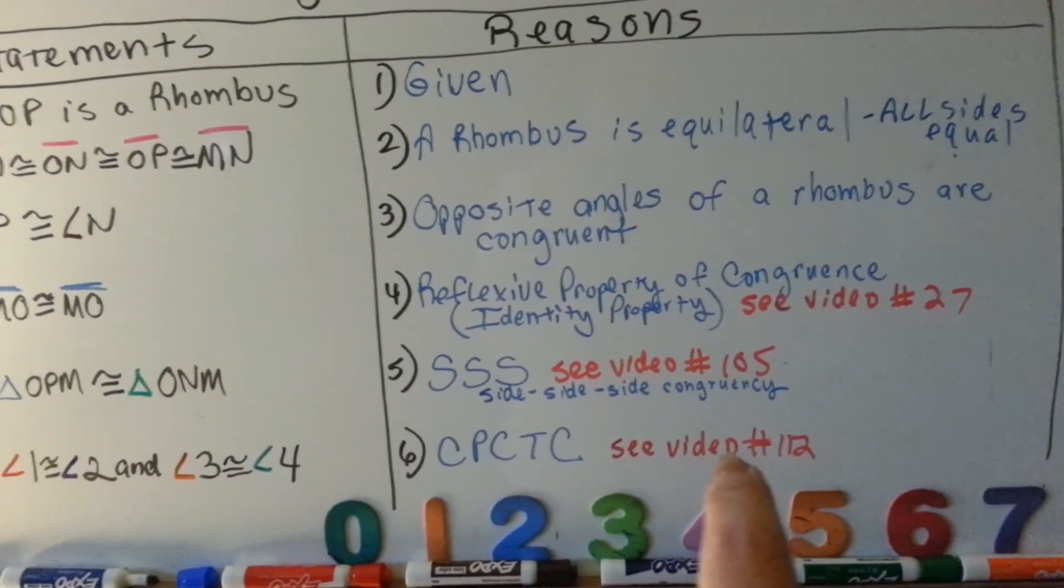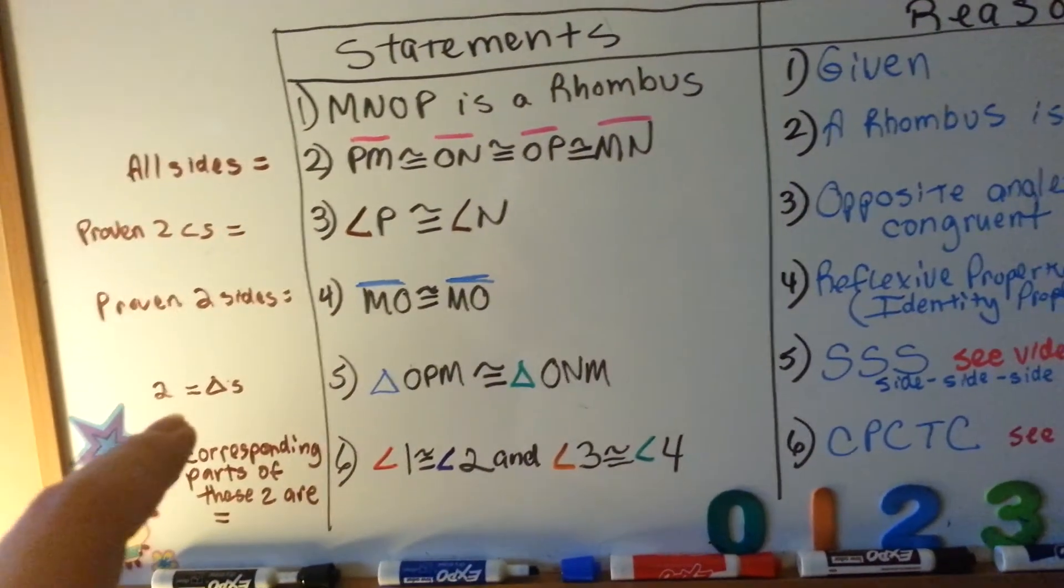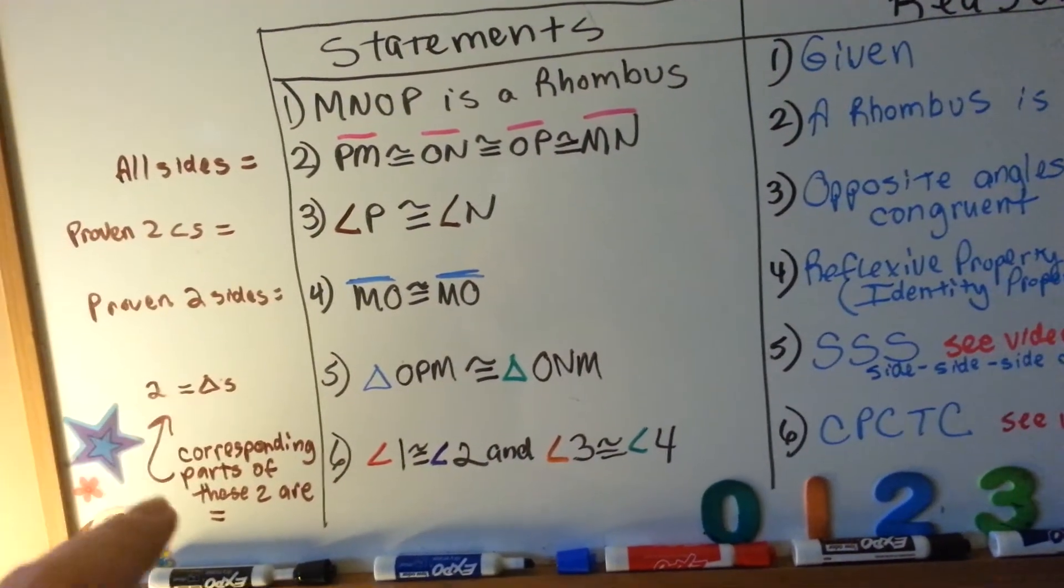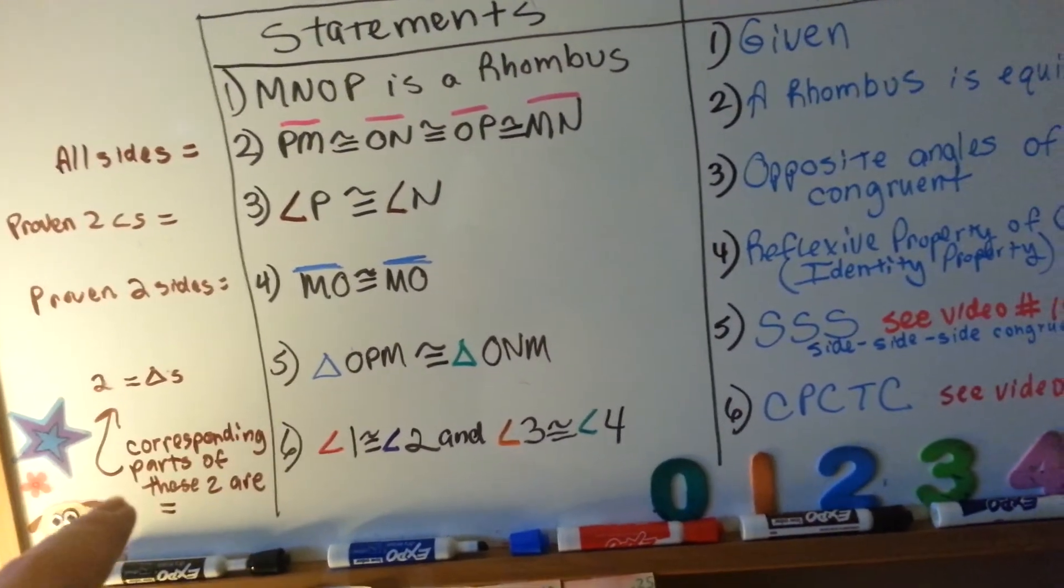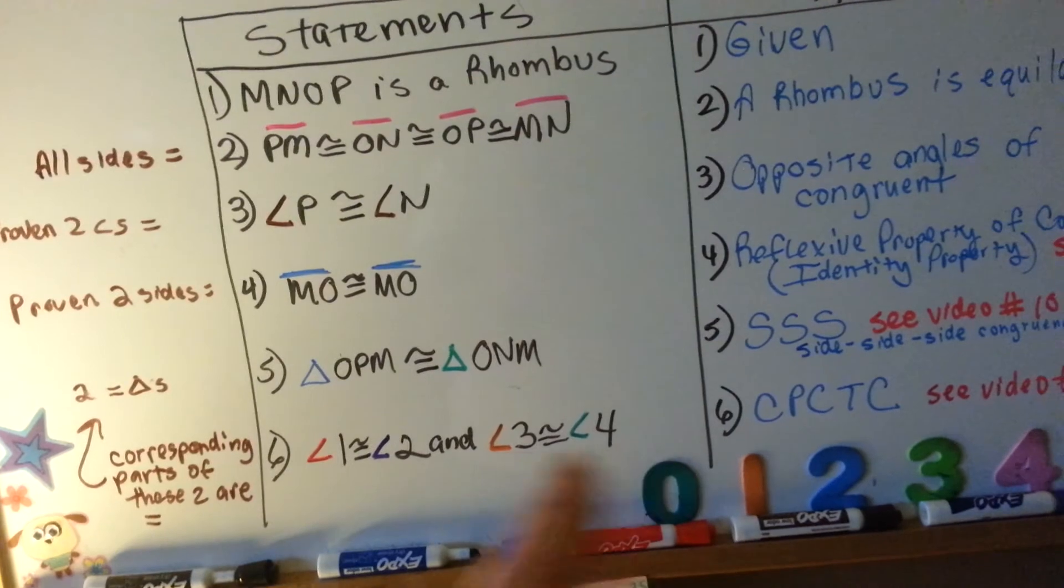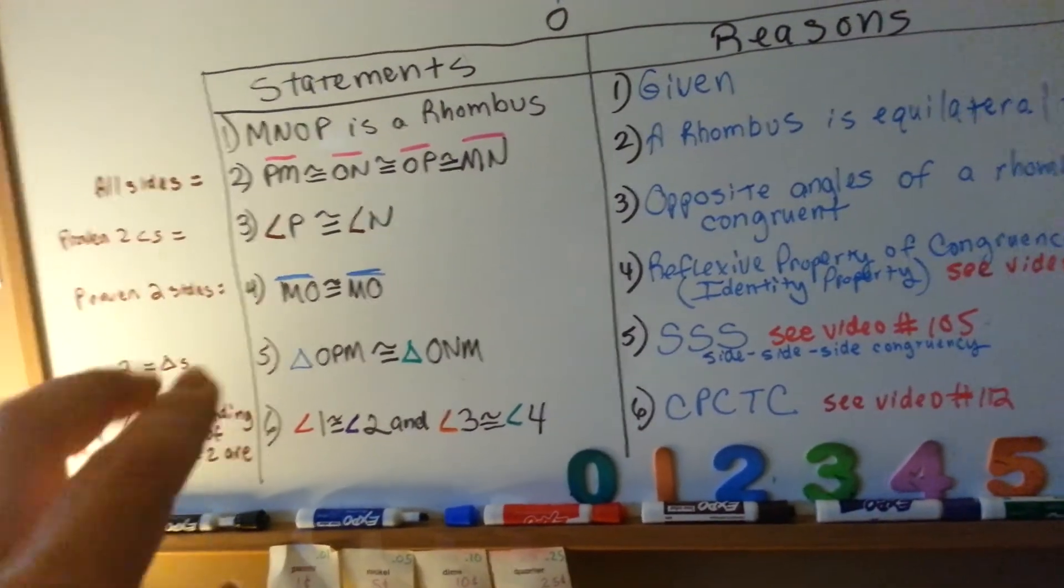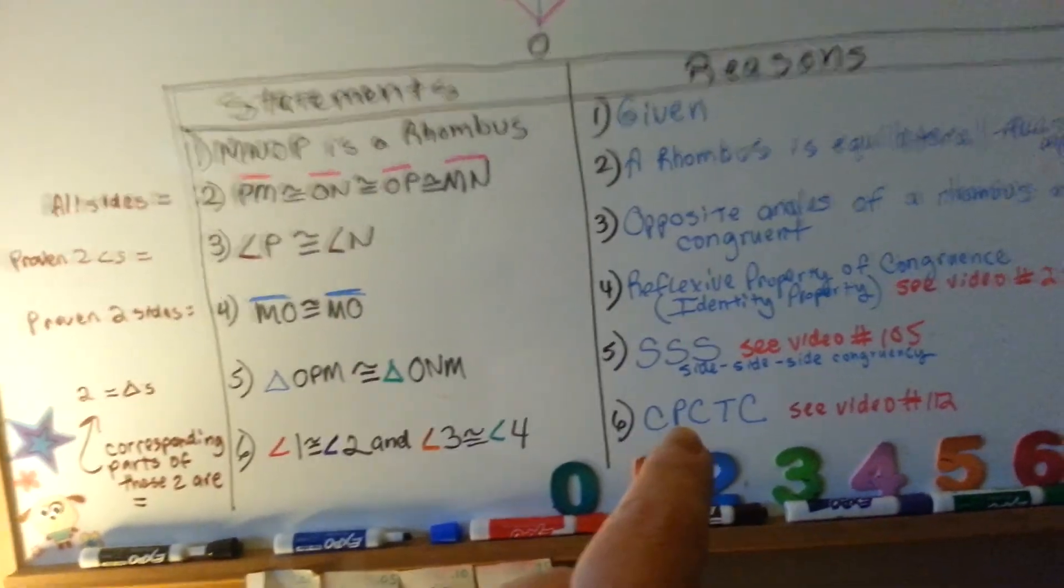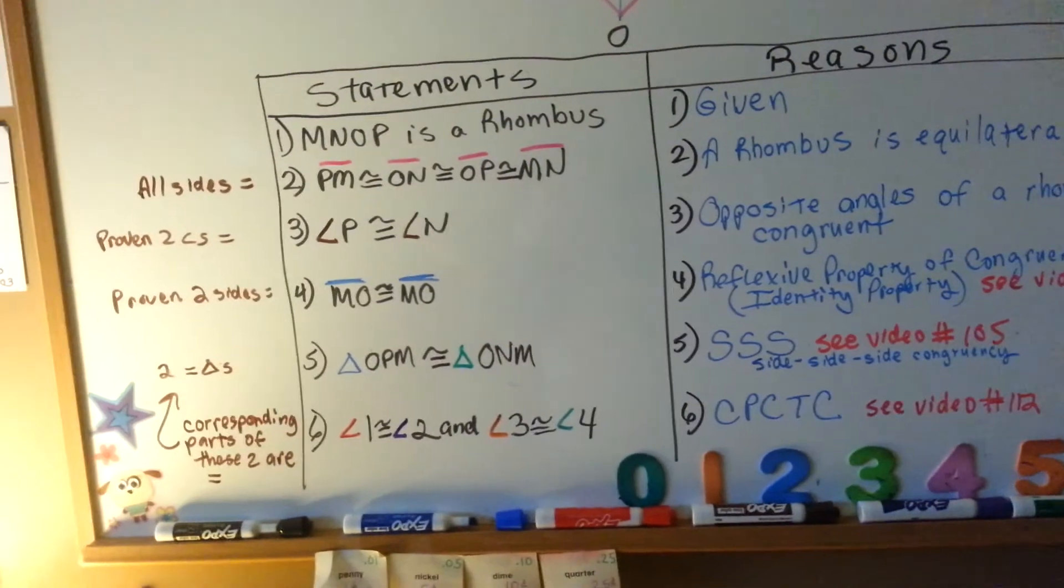If you don't understand this, you should really watch that. It'll be helpful. Because of these two triangles being congruent, we can now use this reasoning of corresponding parts because these two are equal. It says that these are equal. When you use CPCTC, you have to prove that two triangles are congruent first. Otherwise, it's not valid.